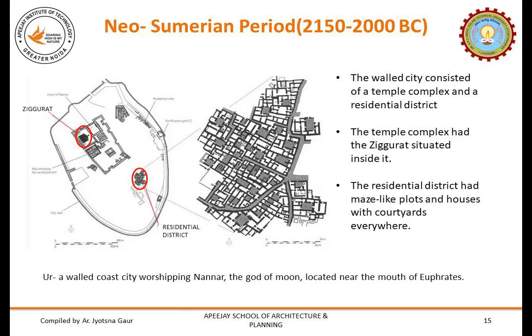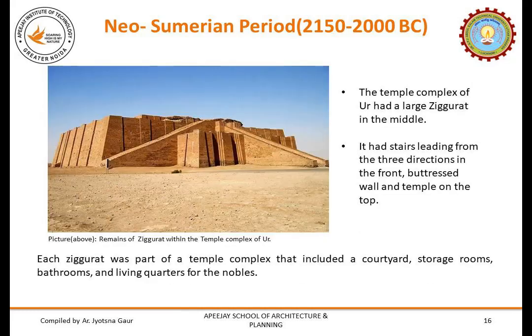The city of Ur consisted of a temple complex and a residential district. The temple complex had the ziggurat situated inside it, while the residential district had maze-like plots and houses with courtyards. Each ziggurat was part of a temple complex that included a courtyard, storage rooms, bathrooms and living quarters for the nobles. The temple complex of Ur had a large ziggurat in the middle with stairs leading from three directions — the front and both sides. It had a buttressed wall and a temple on the top, which housed shrines used for worship by priests.